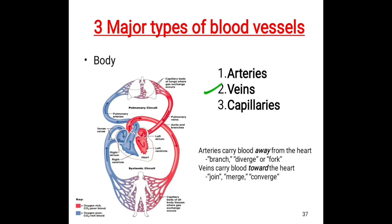Veins are those blood vessels that carry deoxygenated blood from different parts of the body toward the heart. There is one exception: the pulmonary vein, which carries oxygenated blood from the lungs toward the heart.